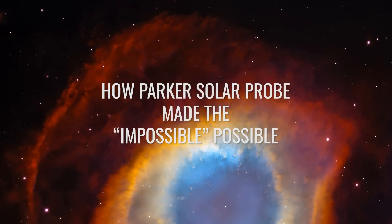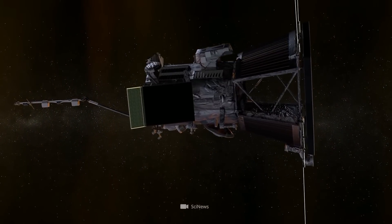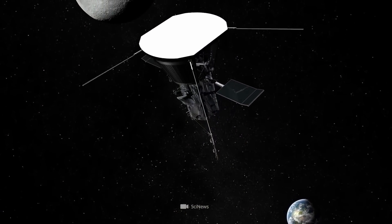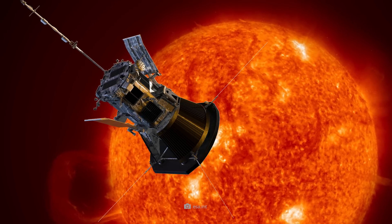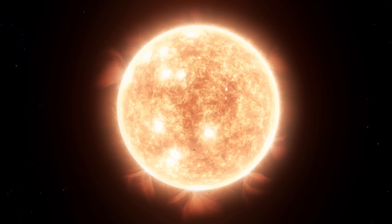How Parker Solar Probe Made the Impossible Possible. After the spacecraft set out in the vastness of space on August 12, 2018, the moment finally arrived on November 21, 2021, and Parker Solar Probe became the first man-made object to pass the boundaries of the solar corona.